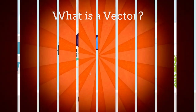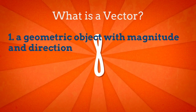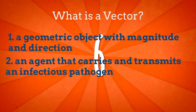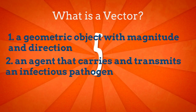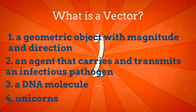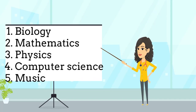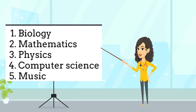But what is a vector? A geometric object with magnitude and direction? An agent that transmits an infectious pathogen? A DNA molecule? Well, it depends from which perspective you are talking about. For different scientists, a vector means different things because vectors are part of multiple areas of our lives.